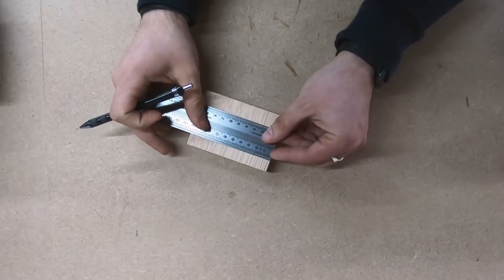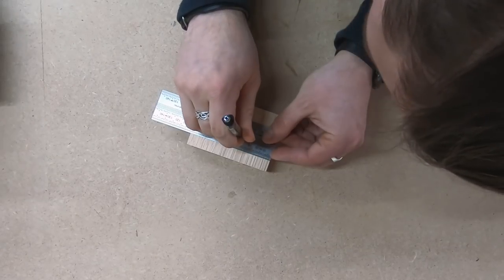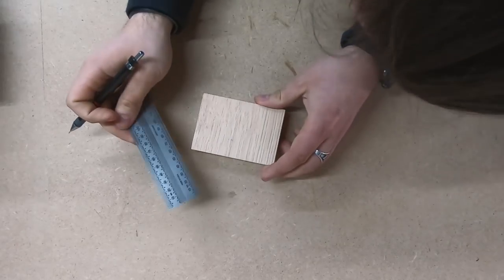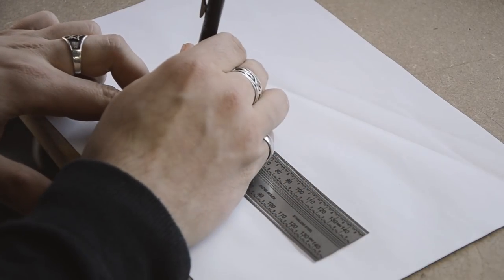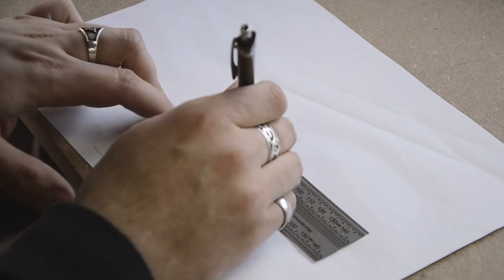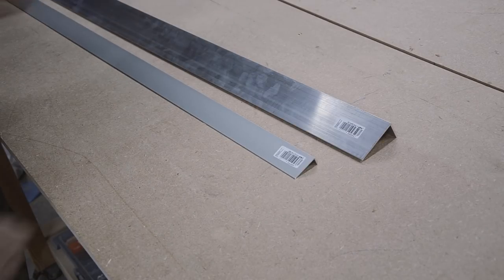However these are rulers that cannot be used optimally on three-dimensional objects. They are intended more for technical drawings on paper. But I want to combine the best of these rulers and the marking angle. That's why I bought these aluminum angles, once in blank and once anodized.